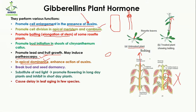So gibberellin and auxin together perform apical dominance. Gibberellin also breaks bud and seed dormancy — dormancy is a period in which seeds are inactive. Gibberellin breaks seed dormancy and allows the seeds to germinate and form a plant.